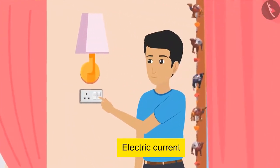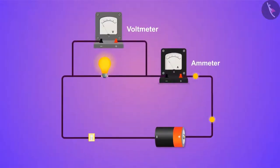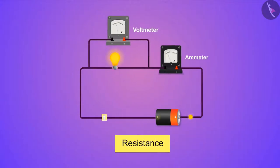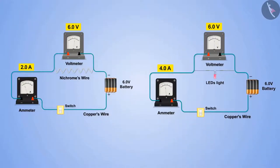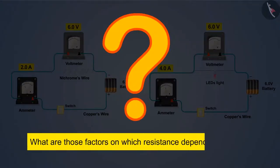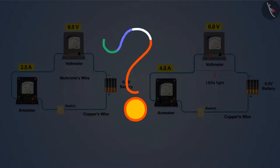With the help of Ohm's law we have come to know a very beautiful relation between potential difference and electric current — the ratio of these two quantities is known as resistance. We have also seen what effect resistance has on the circuit. Every object has its own resistance, but the question is: what are those factors on which resistance majorly depends? In today's video we will see which factors resistance depends on, and also the different ways of connecting resistance in the circuit.